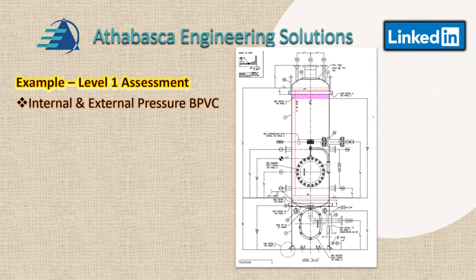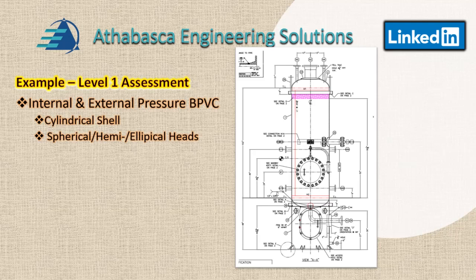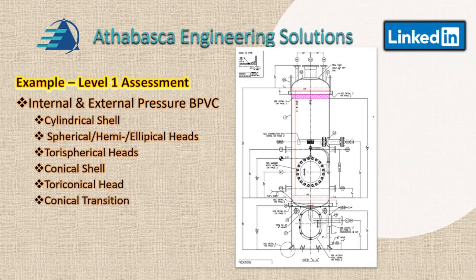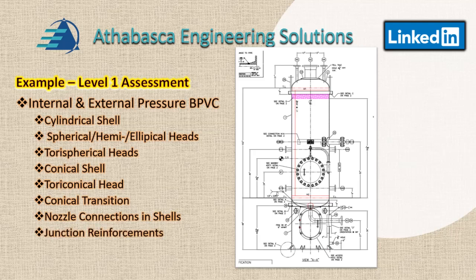There's a section on internal and external pressure vessel components: cylindrical shell equations, semi-spherical and semi-elliptical head types, torsional heads, conical shells, torriconical heads, conical transitions, nozzle connections and shells, and junction reinforcements. The nozzle and junction sections are very involved. In our presentation, we're looking at the cylindrical shell and the heads that are typically found in industry.